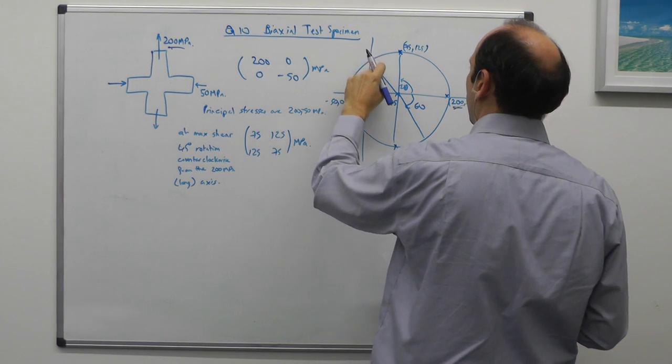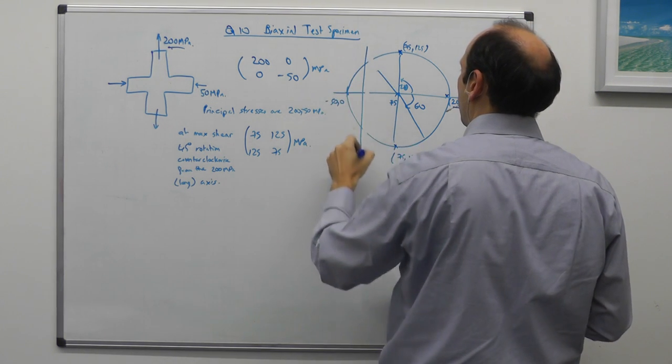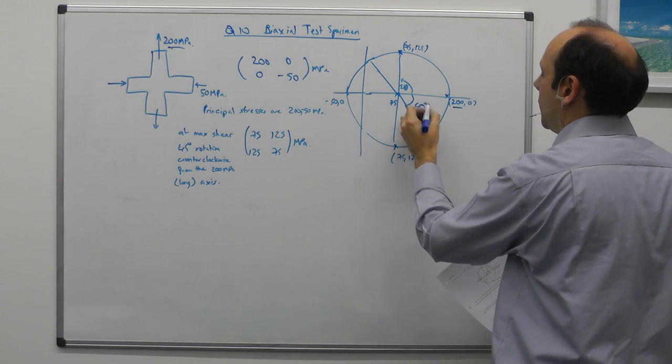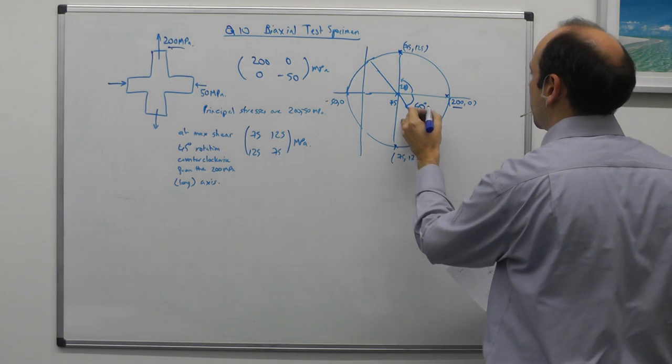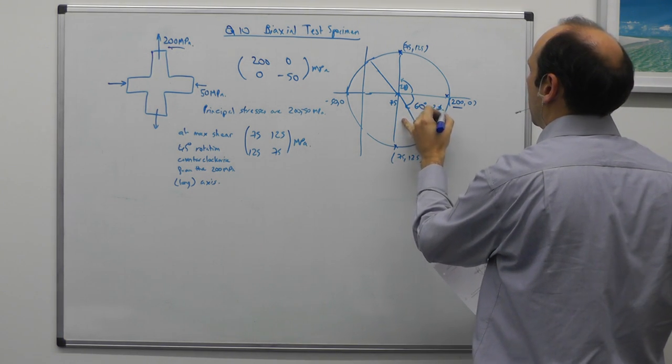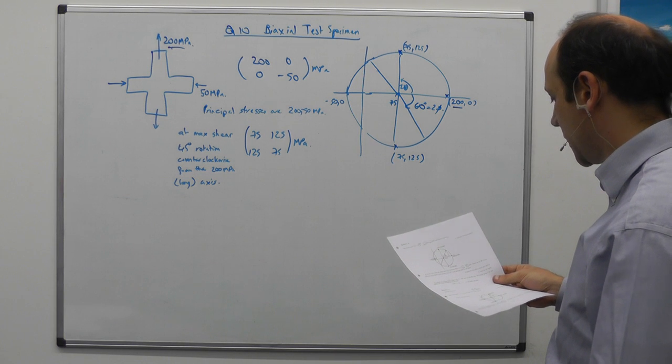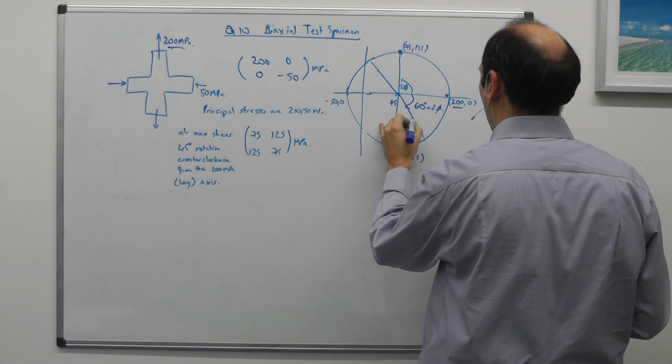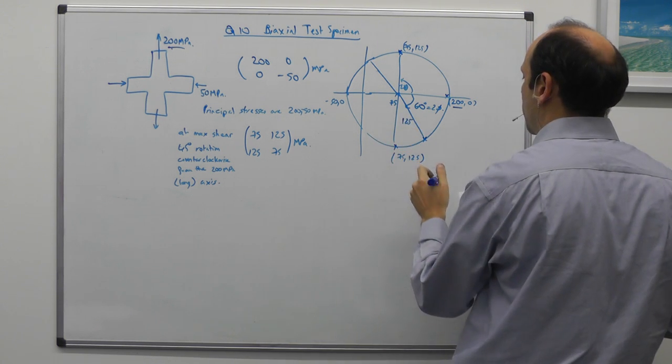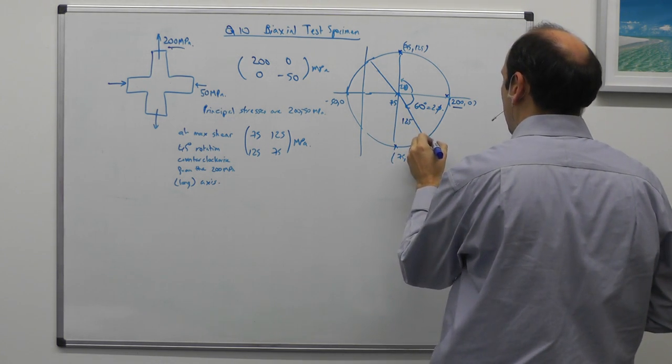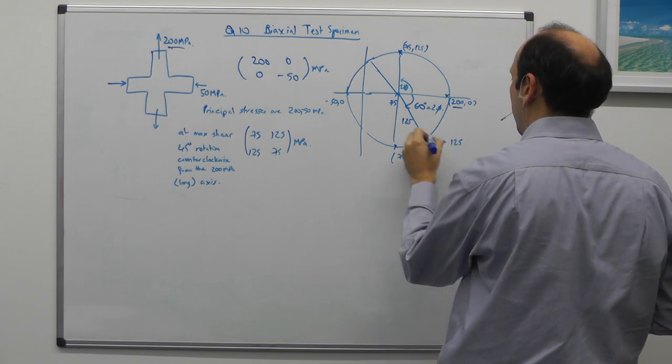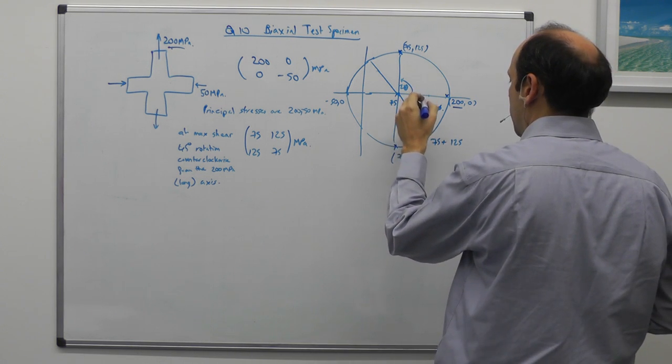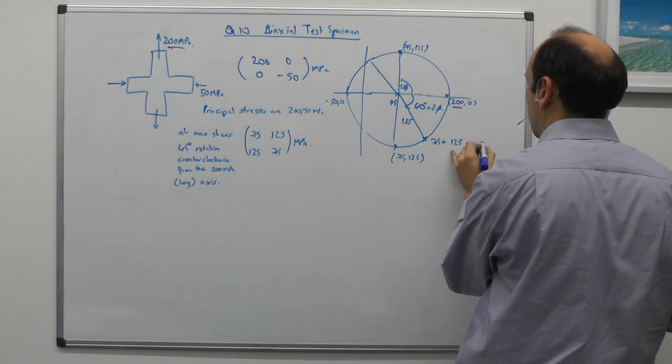I don't know if it's necessarily going to go through zero. I'm going to take the Fifth Amendment on that point until I've calculated it. And I'm going to rotate 30 degrees in reality, 60 degrees in Mohr's circle down. So what I've now got is a radius of 125. And my stress here is going to be 75 plus 125 times cos 60.